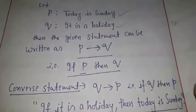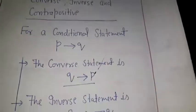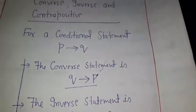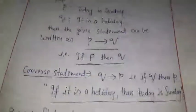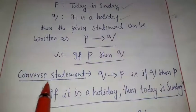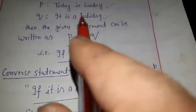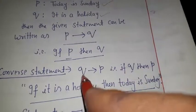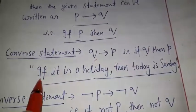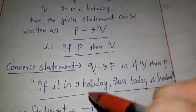Now the converse of P implies Q is Q implies P. So the converse is Q implies P. Since Q is 'it is a holiday' and P is 'today is Sunday', the converse becomes: 'if it is a holiday then today is Sunday.' This is the converse of the given statement.